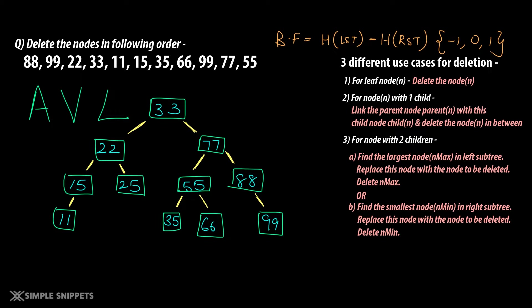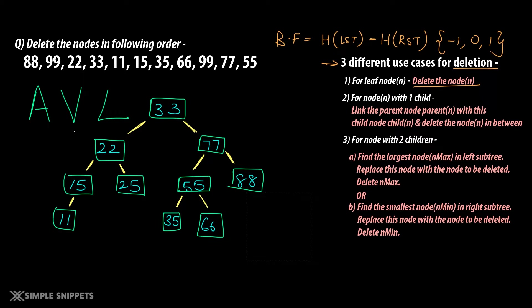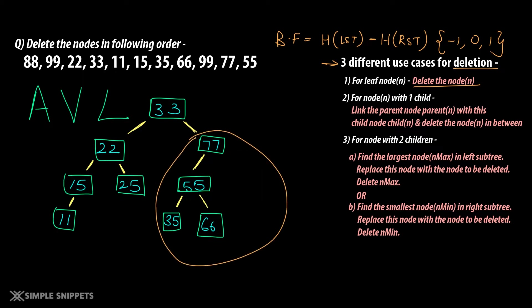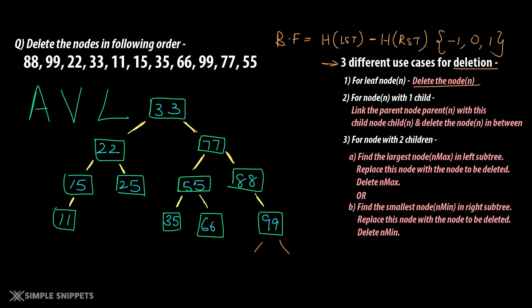These are the three different use cases for deletion of a node in a binary search tree. For a leaf node which does not have any children, you simply delete that node. Once you delete this node, because this is an AVL tree with balance factor in the range of minus one, zero, and one, you will have to calculate the balance factor for all nodes. For example, if I delete one more node — which is also a leaf node — now this will become imbalanced, and rebalancing with rotations will be required.